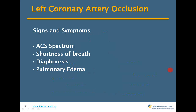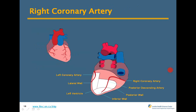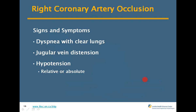Signs and symptoms of left coronary occlusion include the ACS spectrum, shortness of breath, diaphoresis, and pulmonary edema. For the right coronary artery — covering the proximal, posterior artery, posterior wall, and inferior wall — signs and symptoms include clear lungs, jugular vein distension, and hypotension, which could be either relative or absolute.